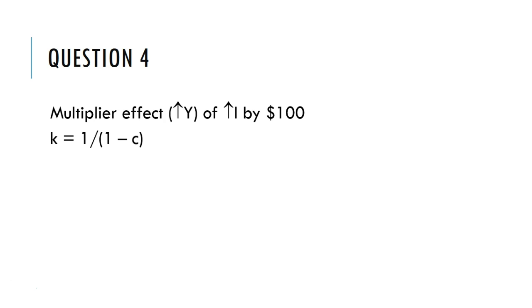So first we need the simple multiplier, which is 1 over 1 minus little c. Little c stands for the marginal propensity to consume, and we were told that the marginal propensity to consume was 0.8. So the multiplier is 1 over 1 minus 0.8, or in other words 1 over 0.2, or in other words 5.